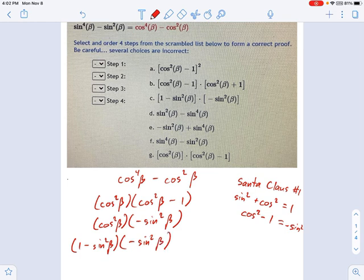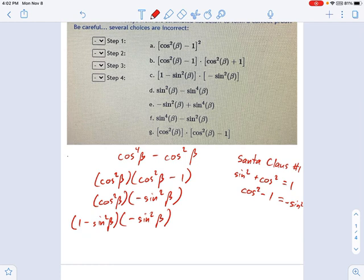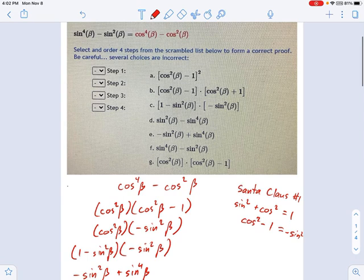I still have negative sine squared beta here. I think great, now everything is sine squared, so let's just multiply this out again. I'm going to have negative sine squared beta times negative sine squared beta, and negative sine squared beta times negative sine squared beta is positive sine to the fourth beta.